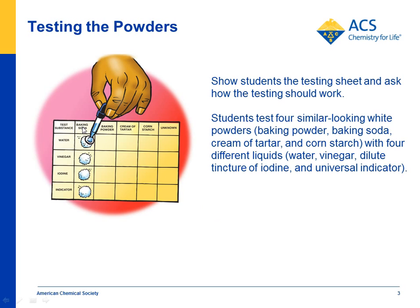Students take baking soda, baking powder, cream of tartar, cornstarch, and the unknown — the unknown is baking powder — and put a pile of each on their test chart. Then students test each one with water, vinegar, iodine, and an indicator solution. We use universal indicator, but you can use another one if you want. They'll see the characteristic series of reactions.